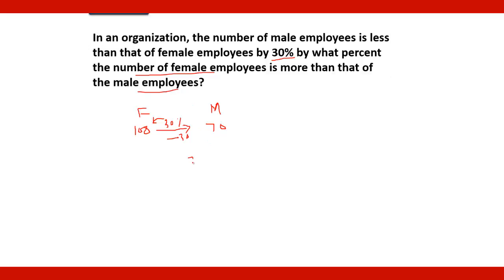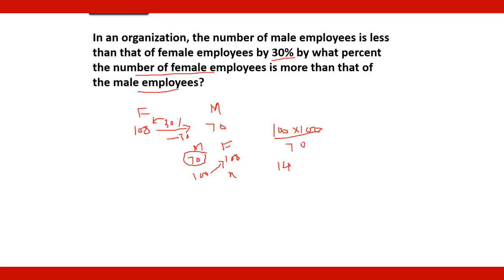So male employees are 30 percent less than females — that is 70. If there are 70 males and 100 females, then for 100 males, how many females will there be? Cross multiply: 100 multiplied by 100 divided by 70 gives approximately 142.85.